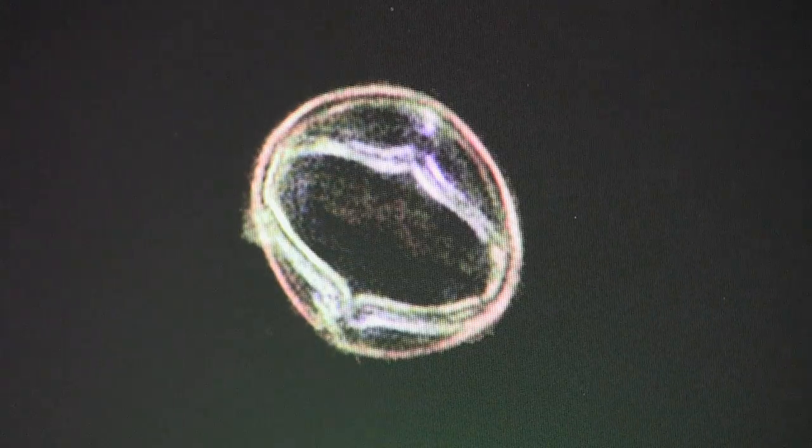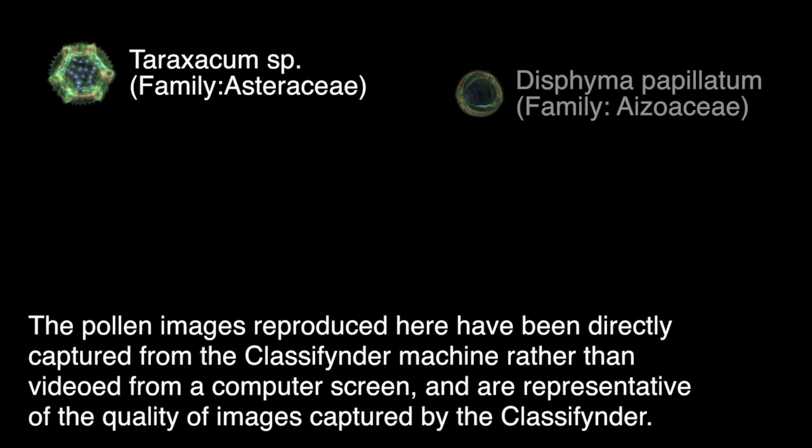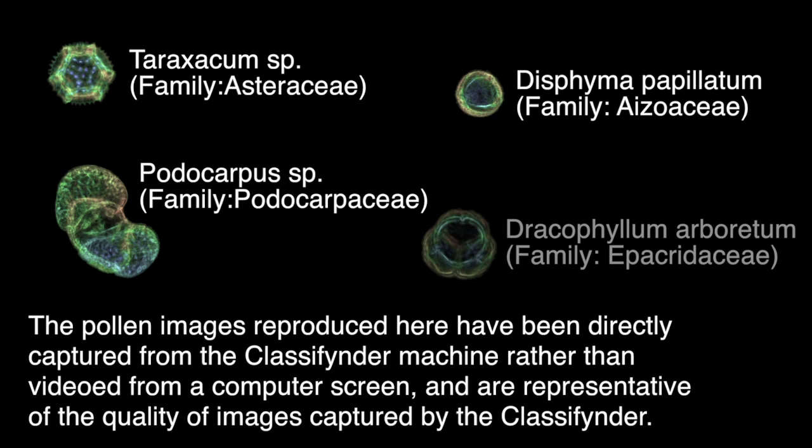The colour coding reflects depth, and that blue tones reflect the top of the pollen grain whereas yellows and reds represent the back of the pollen grain. So by doing this we give a sense of the 3D structure of the pollen grain.